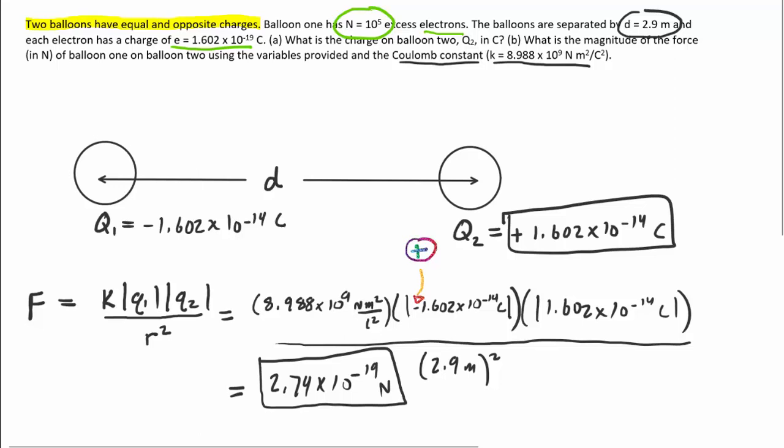The magnitude of the force of balloon one on balloon two. Incidentally, this is also the magnitude of the force of balloon two on balloon one. So the two balloons are exerting equal but opposite forces on each other, according to Newton's third law.